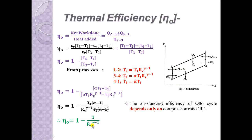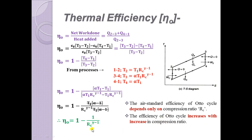The thermal efficiency of the Otto cycle depends only on the compression ratio RC. Efficiency increases with increasing compression ratio. The practical value of RC generally lies between 5 and 10 for the Otto cycle.